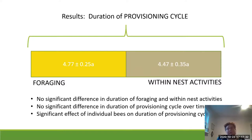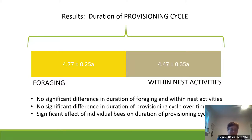The duration of a provisioning cycle included two components: the foraging component and the within-nest activities. When I aggregated all the data, the foraging component and within-nest activities were not significantly different from each other — both were about four-plus minutes each. There was also no significant difference in the duration of the provisioning cycle over the course of the morning, from 6 through to noon.